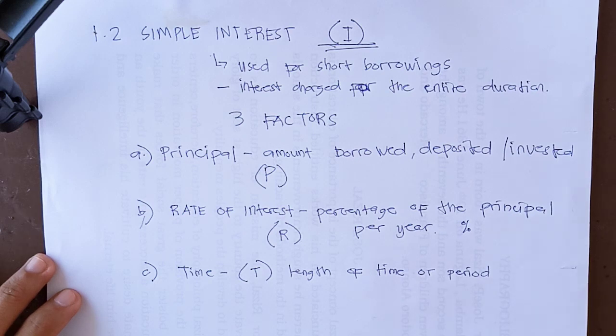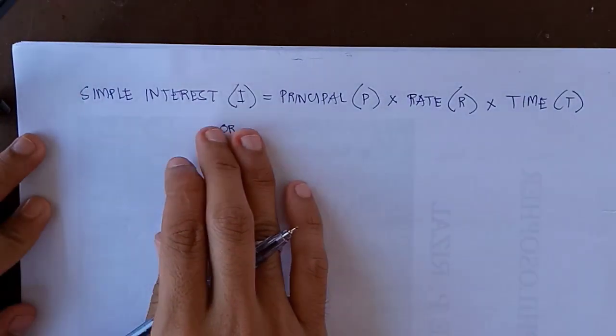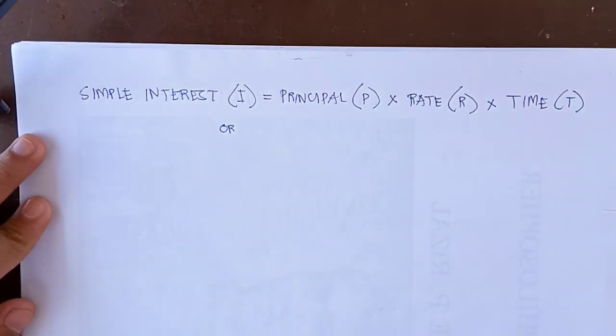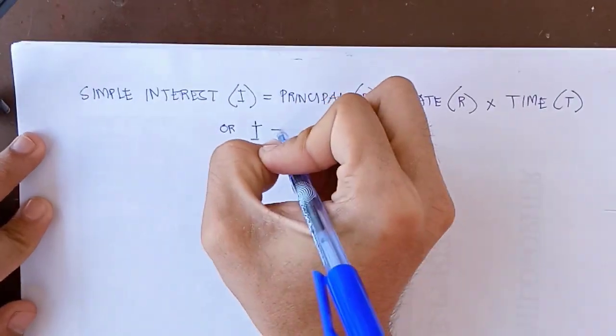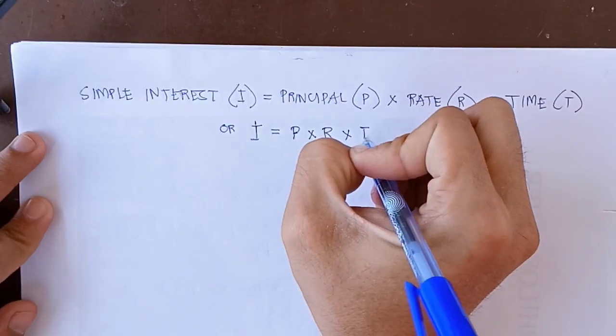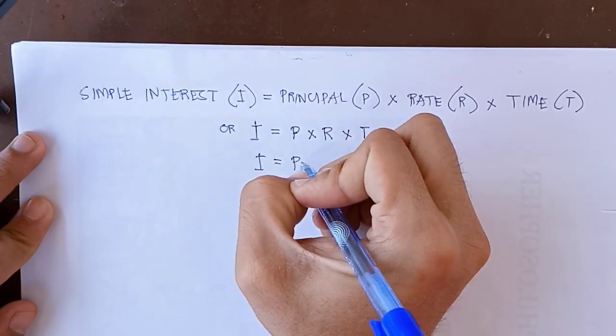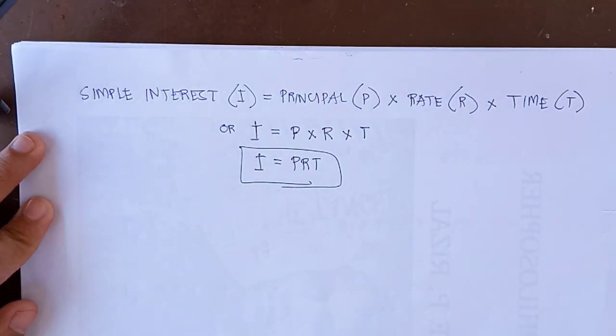And here's the formula in getting the simple interest. Simple interest is equal to principal times the rate times the time. Or we can simply write this as I = P × R × T. So we will be using this formula in getting a simple interest.